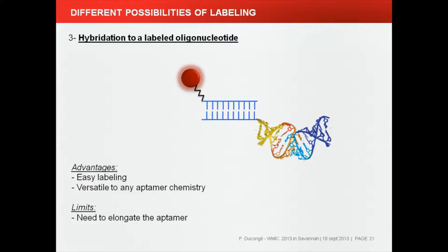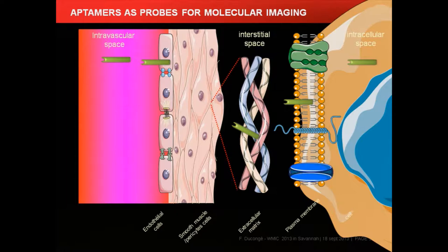As probes for molecular imaging, aptamers can target proteins present in the intravascular space or attached to the endothelium, proteins in the extracellular matrix, and proteins expressed at the surface of cells. The intracellular space is essentially inaccessible because nucleic acids do not travel through the plasma membrane.